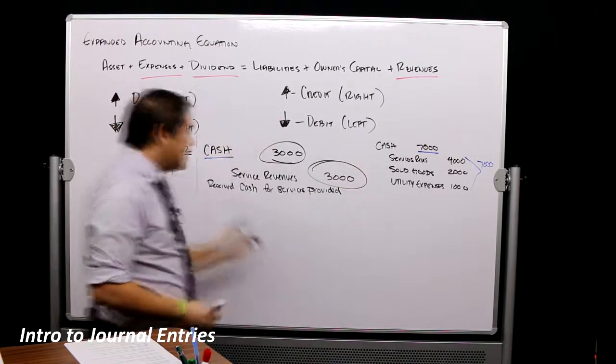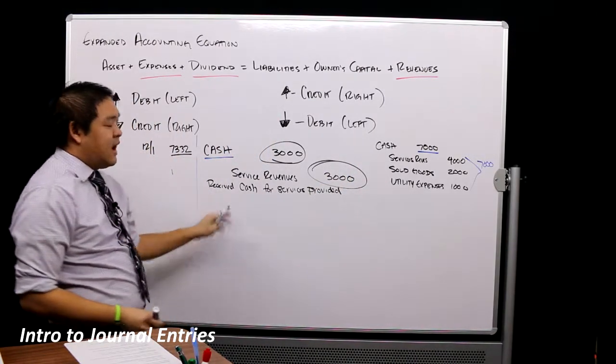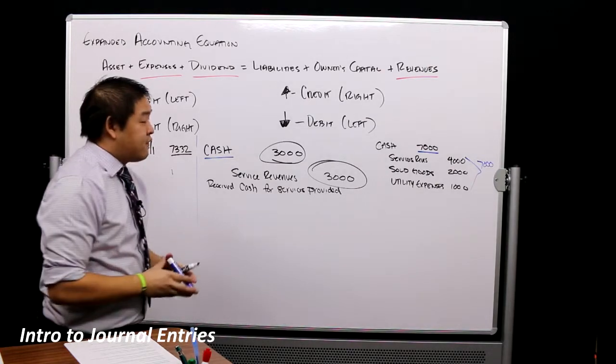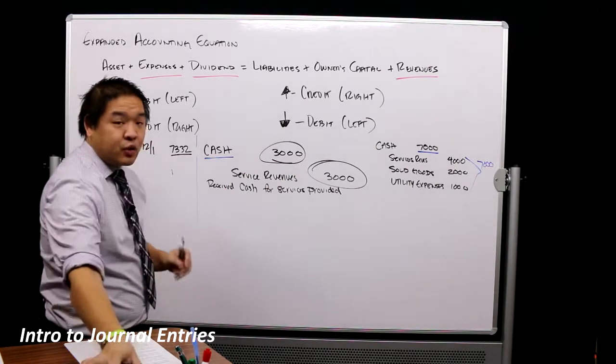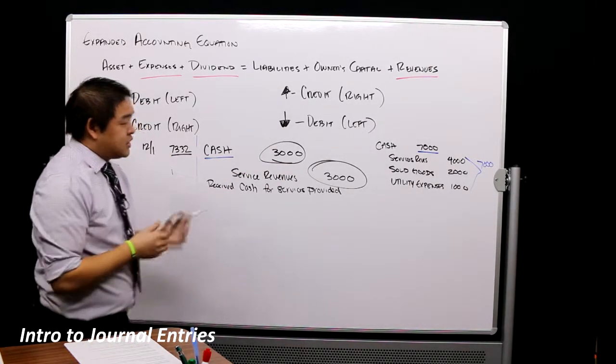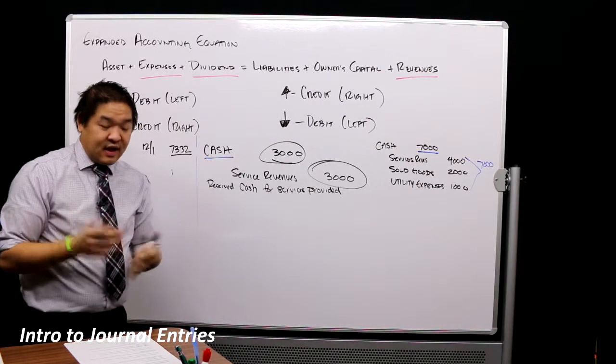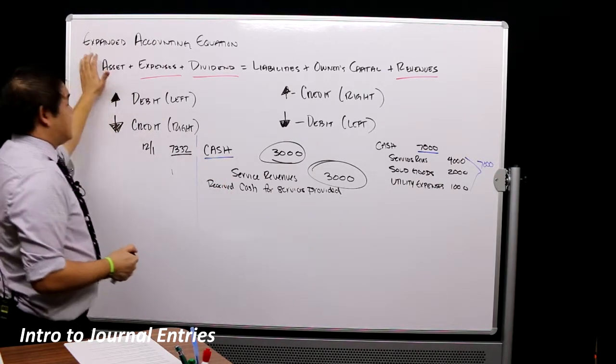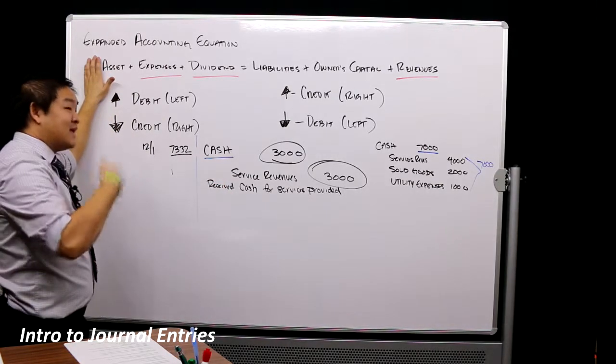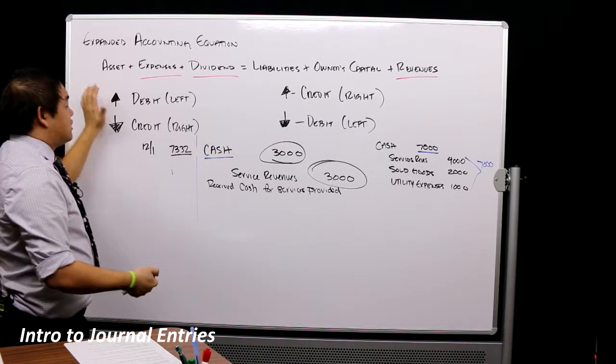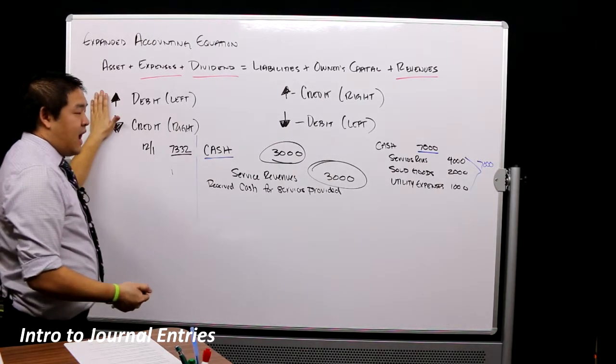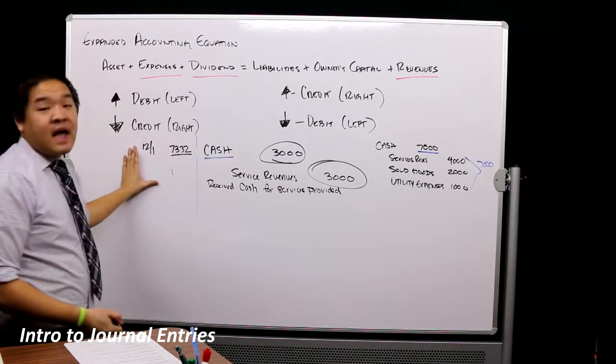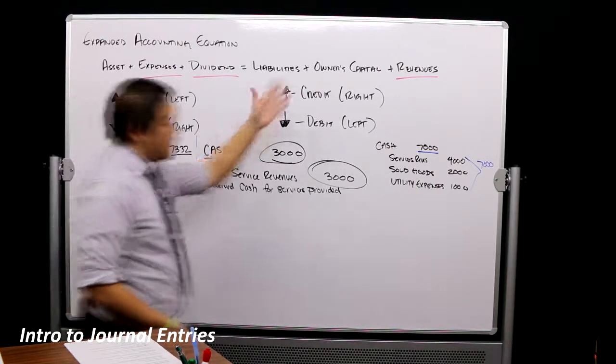Obviously, what's missing from here is a date, transaction number, and then a description for it, but that's a journal entry. So again, journal entries, they're pretty easy, and I say that knowing that I've done it for years, but they're pretty easy once you understand the expanded accounting equation, you know the debits and the credits, and then you know the kind of the layout of debits and credits.